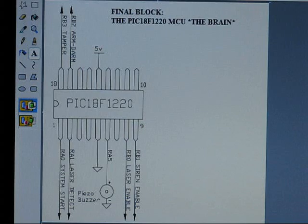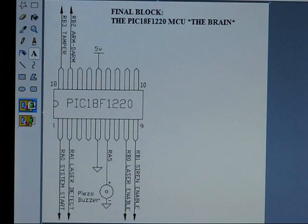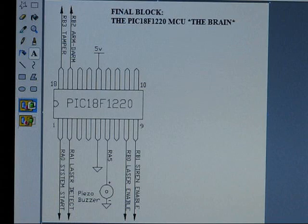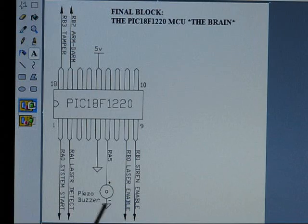This is the final block, our PIC 18F1220 brain chip. I've programmed this thing to follow a program algorithm, which can be seen on the Instructable. By algorithm, I mean a set of steps in which the program executes. We've got our inputs which input the arm-disarm signal, our tamper input, our laser detect input connected to our light sensor circuit, and our system start input which is connected to the light sensor circuit that detects whether the lights are on or off in a room. We've got a piezo buzzer that acts as an indicator, and that is also included in the algorithm pasted on the Instructable.